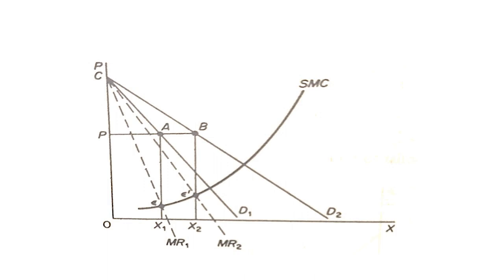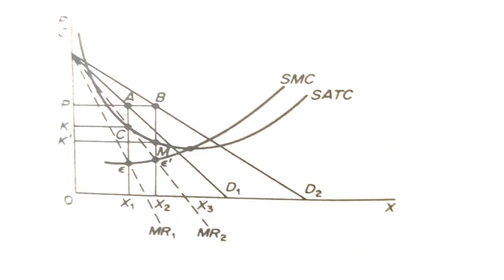At the new equilibrium, the price is the same as before but the quantity produced is larger, that is OX2 is greater than OX1. In this case the total revenue of the monopolist will increase to OPBX2, which is greater than OPAX1. Furthermore, this profit will be large because the monopolist's short-run total cost will decrease over the range between OX1 and OX2.